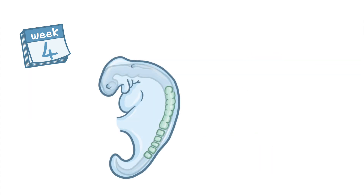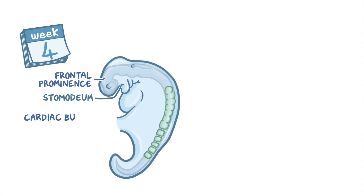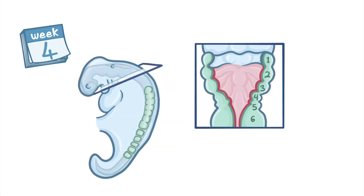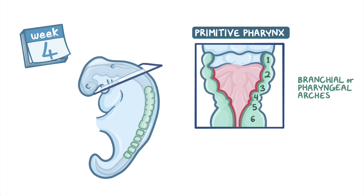At this point, a small pit called the stomodeum forms between the frontal prominence and the developing cardiac bulge, and it will eventually become the oral cavity. At the same time, six little bulges, or thickenings of the mesoderm, sprout from the primitive pharynx to become the branchial or pharyngeal arches.